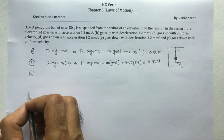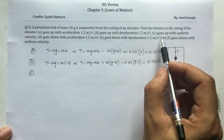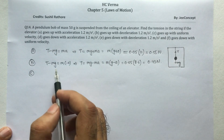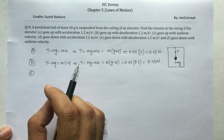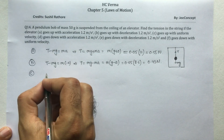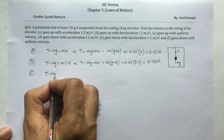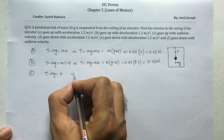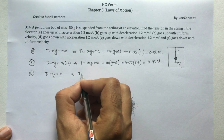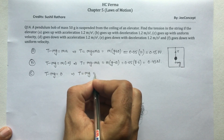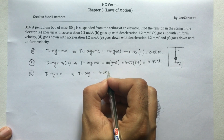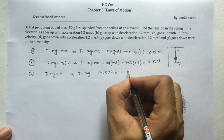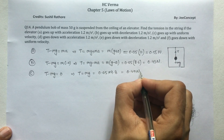Part C: the elevator is going up with uniform velocity. If it is going with uniform velocity, that means the acceleration is 0. So T minus mg equals m times 0, which gives T equals mg, or 0.05 into 9.8, that means 0.49 Newton.